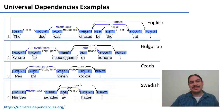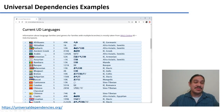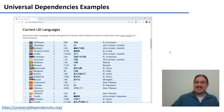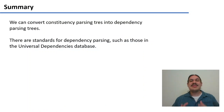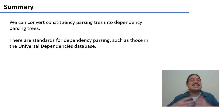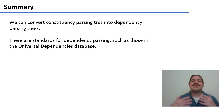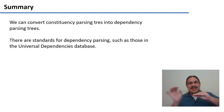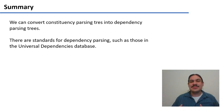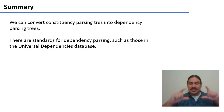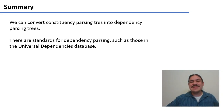There are many languages for which people have done Universal Dependencies — I invite you to explore them. In summary, we can convert constituency parsing trees into dependency parsing trees, and there are standards for how to do it, including the Universal Dependencies database. We now have two alternatives for segmenting sentences: by constituents or by dependencies. In the next and final video, we'll look at a third option — just chopping sentences into their larger components — which we'll call chunking.